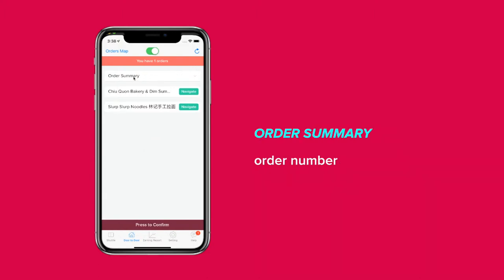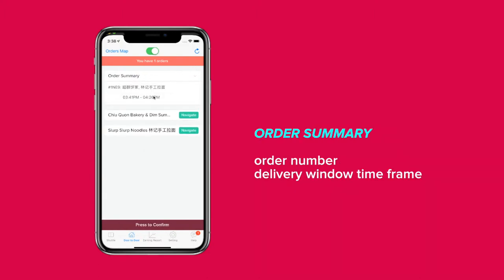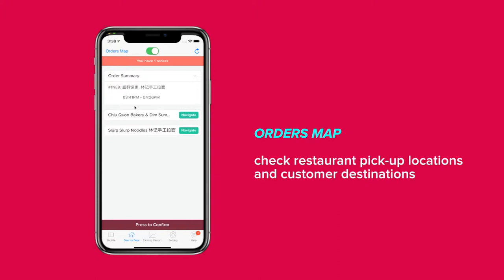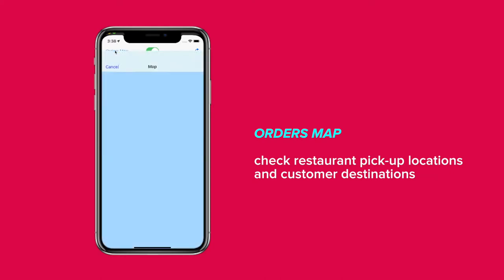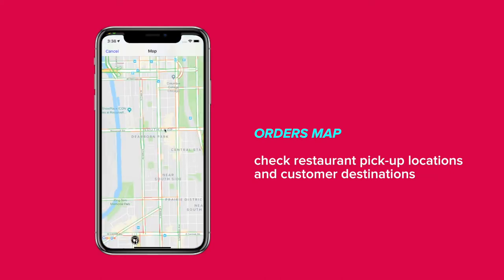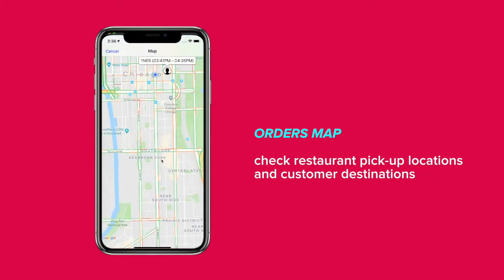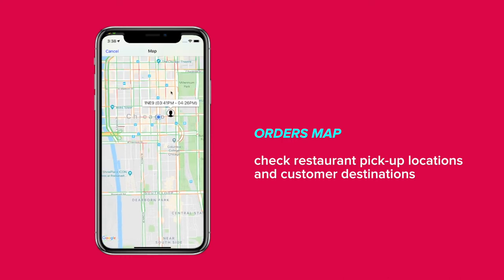When you tap Order Summary, you can view the order number, delivery window time frame, restaurant name, and order preparation status. The Order's Map button at the top of the page will show you where the restaurant is located, and it will also show you where the customer's address is located.